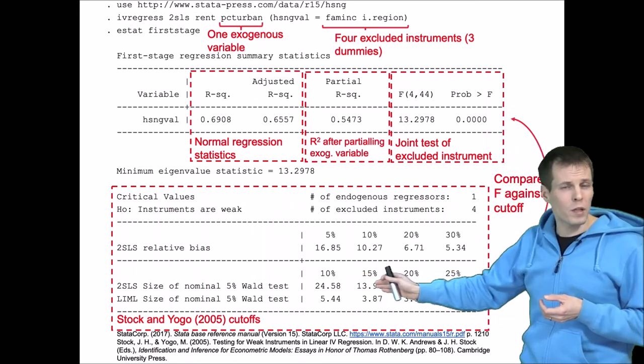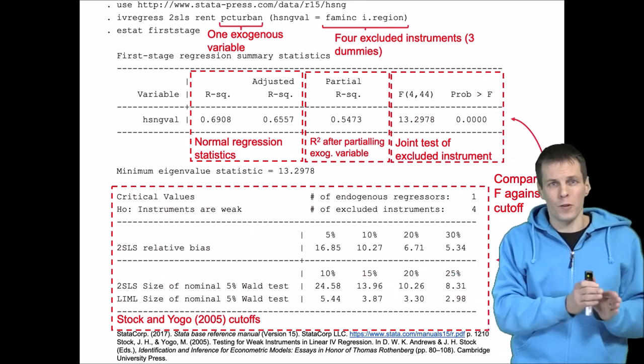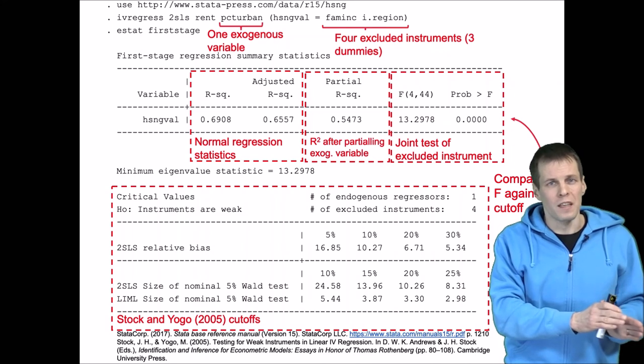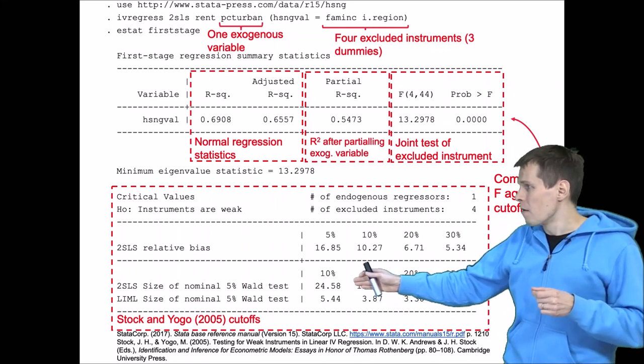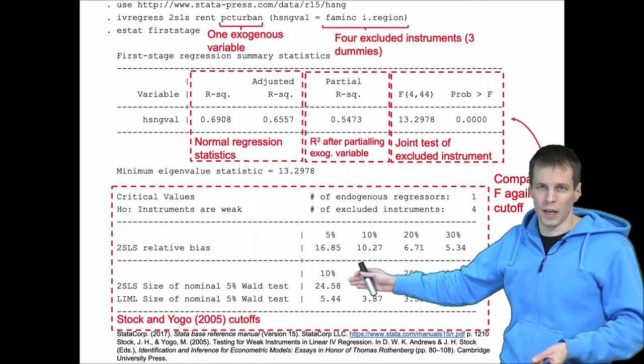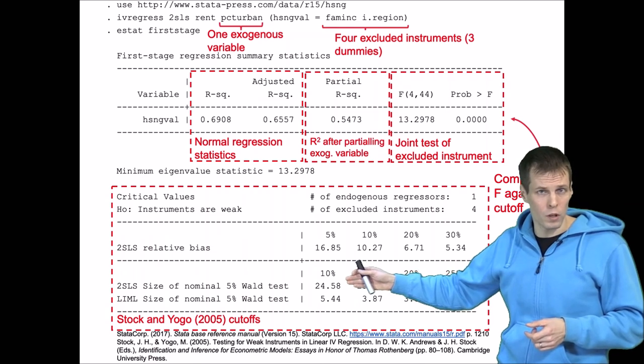If we are okay with 10 percent false positive rate for a test that says the false positive rate is five percent, then we should say that if the F statistic is more than 24.58, then we know that the false positive rate will not exceed 10 percent.